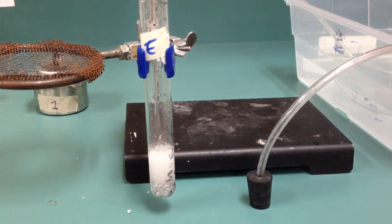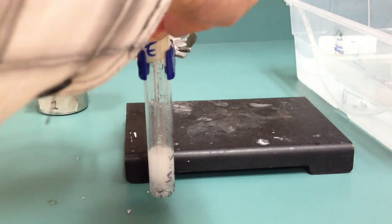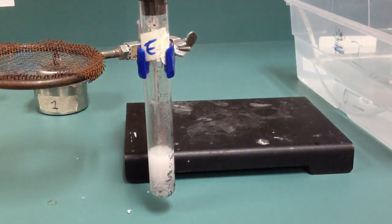Now, you can see it's starting to bubble there. That's because the zinc is grabbing onto the chlorine and making zinc chloride. And it's releasing hydrogen gas.